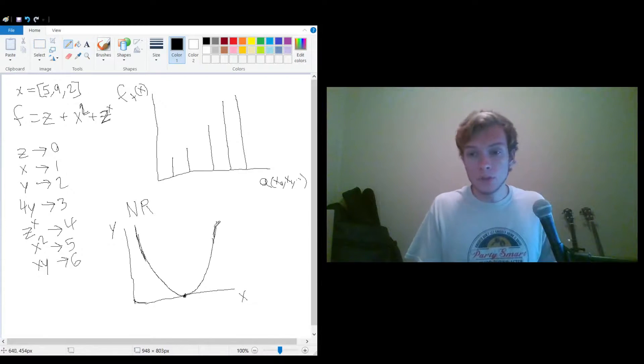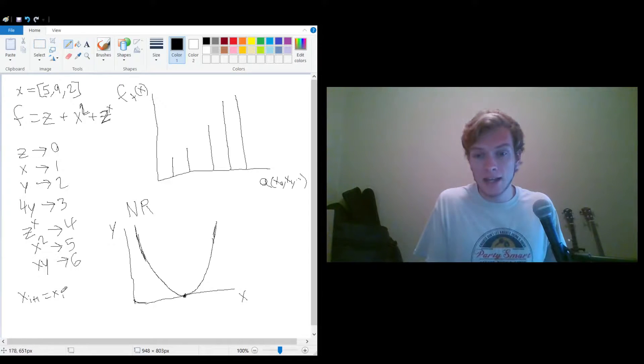So what we would do is, so the Newton-Raphson formula is a way of improving upon a guess. And the way it does this is by the algorithm x_i+1 is equal to x_i minus the value of the function at x_i over the first derivative of that function at x_i.